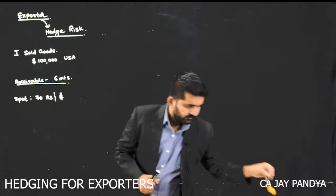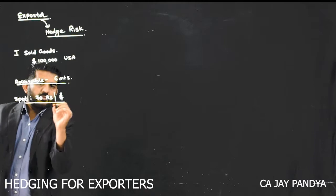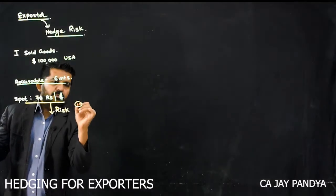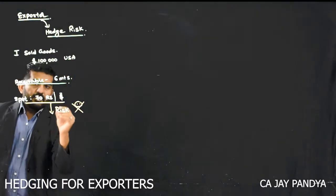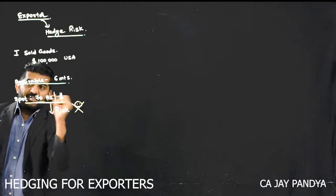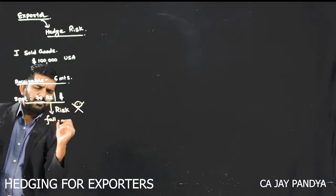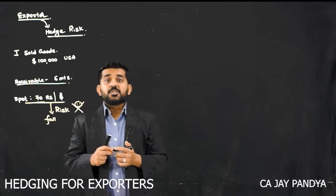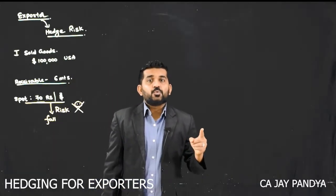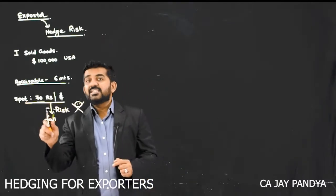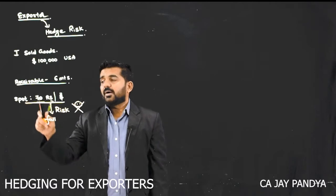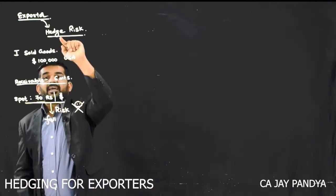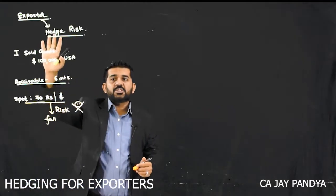Now let's talk about the risk. What is the risk? The risk is that the price of dollar will fall. In extreme cases, if this price after 6 months becomes 60, instead of 70,00,000 rupees in Indian currency, I will be getting only 60,00,000 rupees if the market price becomes 60. So there is a risk which I can nullify, I can hedge, I can reduce.